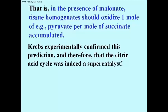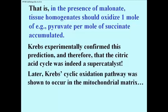In other words, he would do the experiment and he would show for every mole of pyruvate that he added to the homogenate, a mole of succinate would accumulate. It's in the presence of malonic acid, which would block the reaction from going past succinic acid.